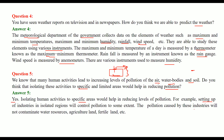The pollution caused directly by industries in isolated areas will not contaminate water resources, agricultural land, or fertile land. That surrounding area will be somewhat safer compared to an area near the industry.